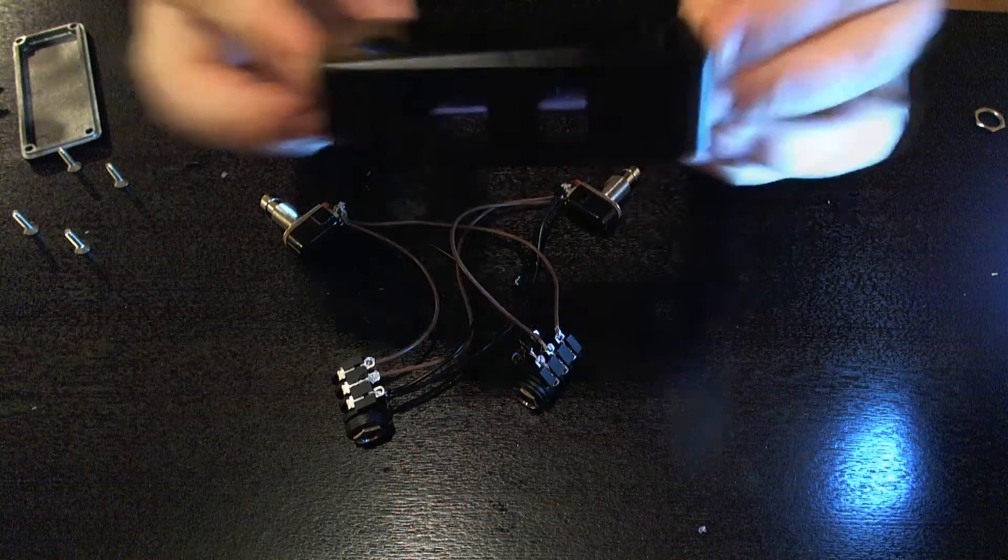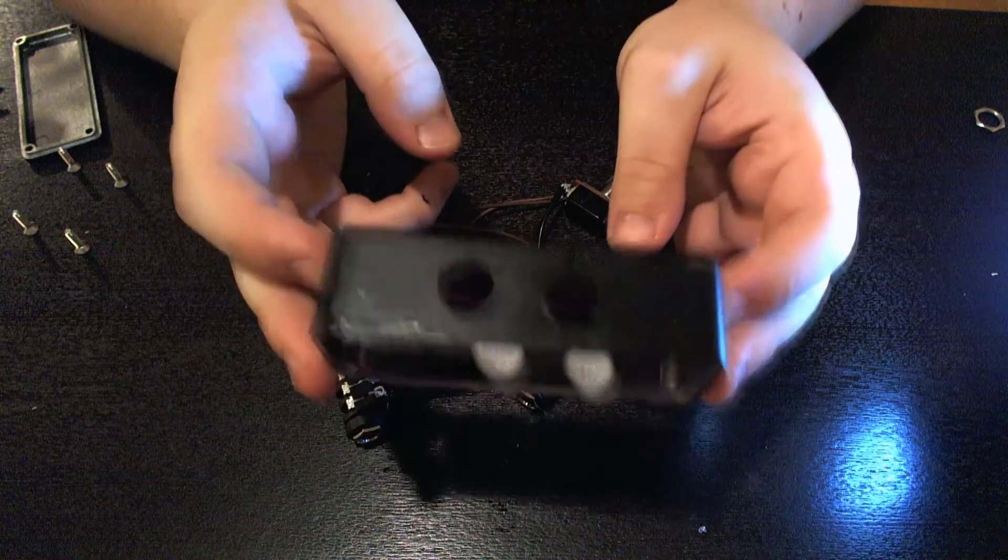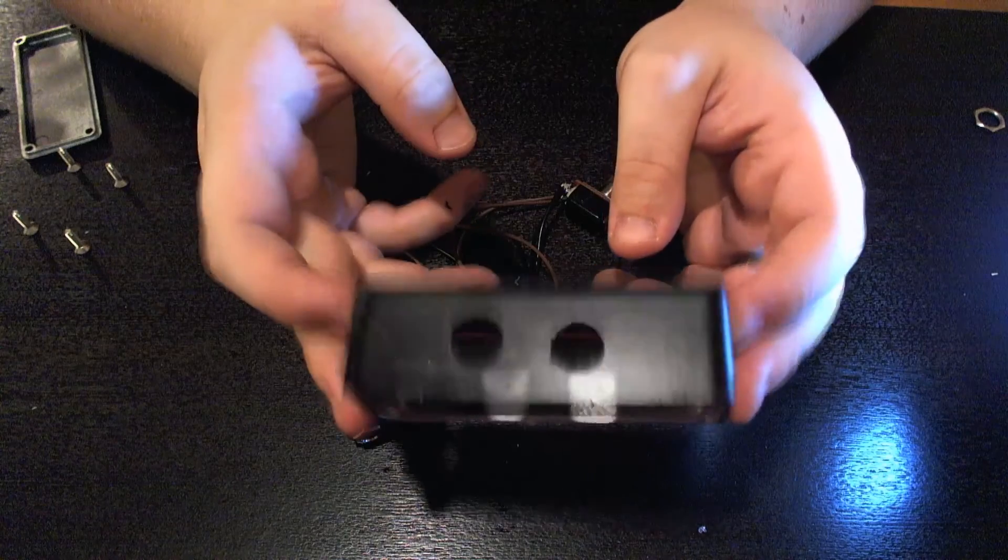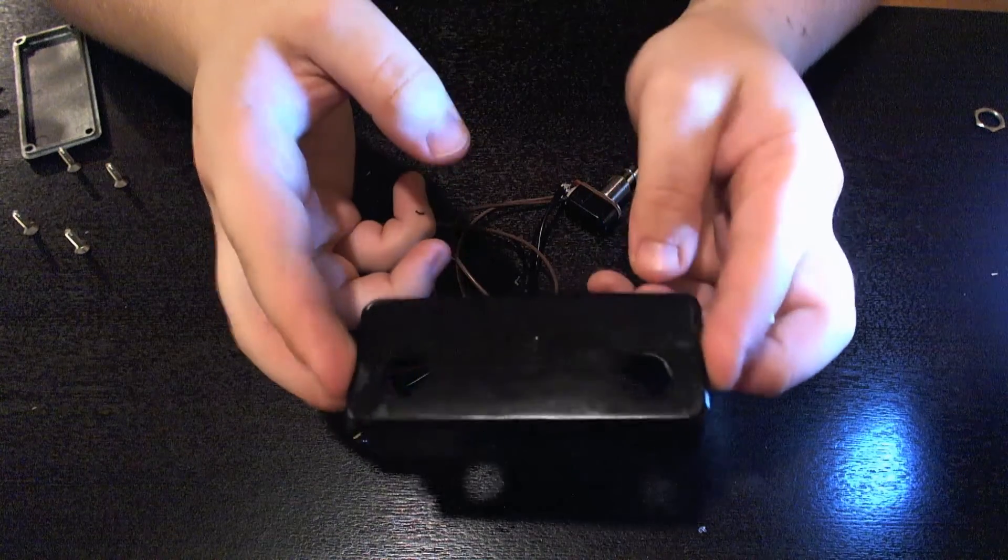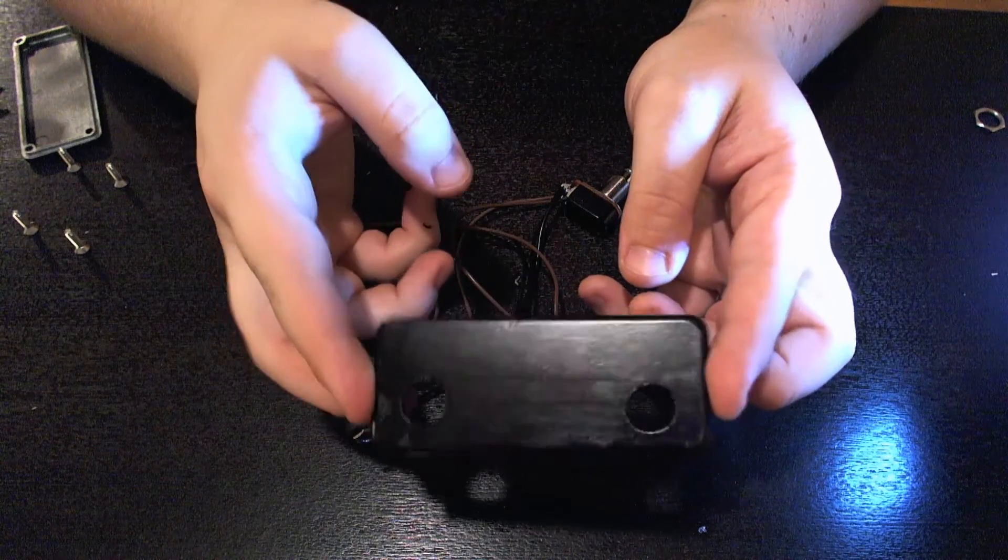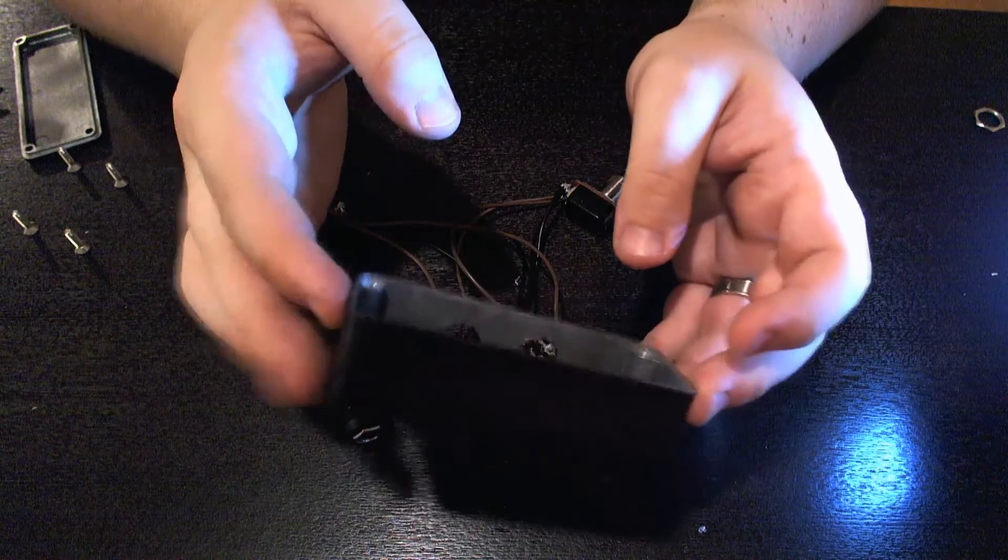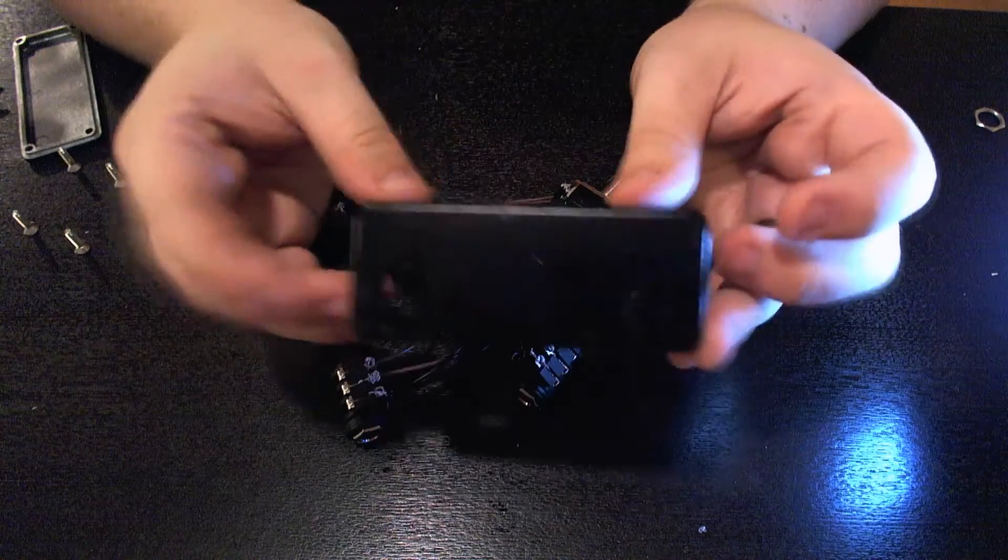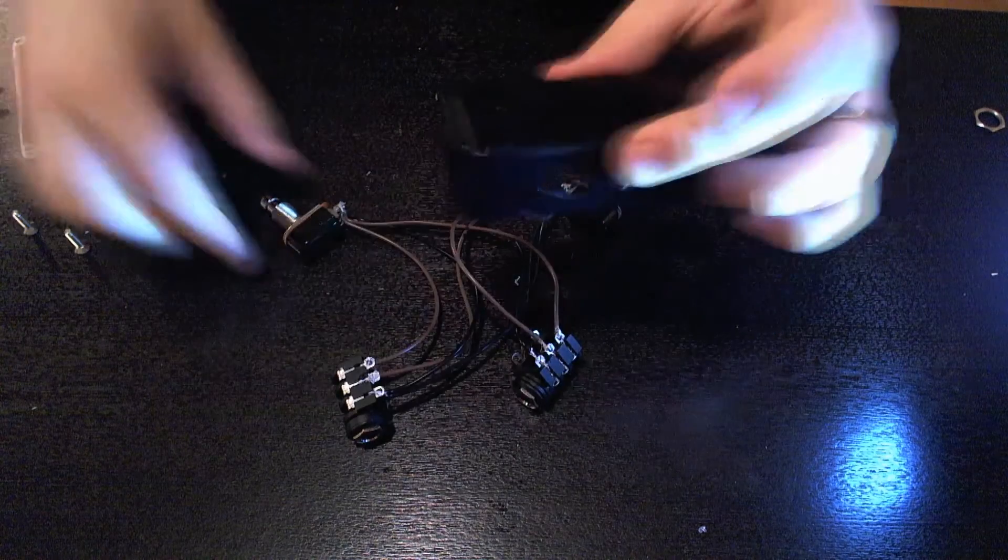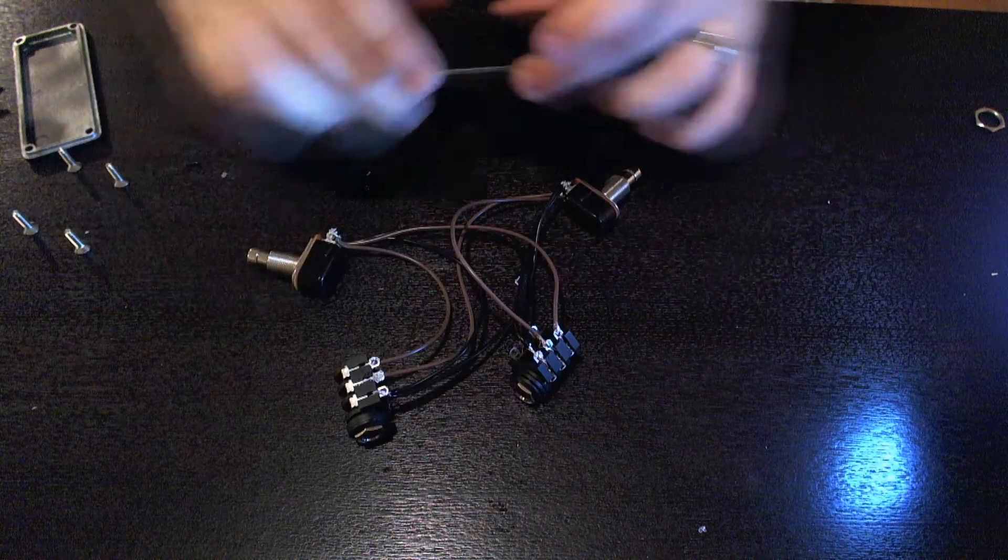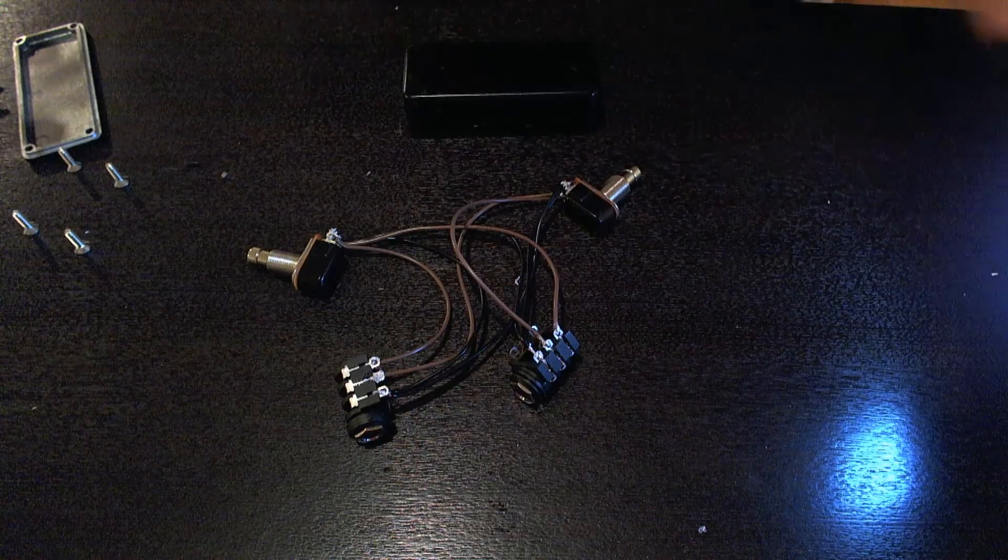So here I have the painted enclosure. I quite like the black on it, got the holes drilled in there so now all we need to do is put the switches and the output jacks into the enclosure. Now because this takes a little bit of time I'm just going to speed it up and get the finished product.